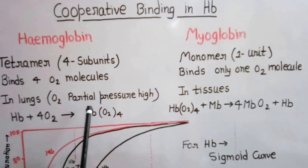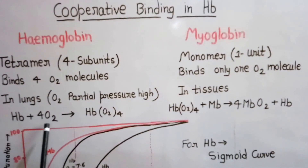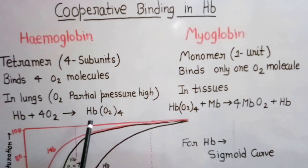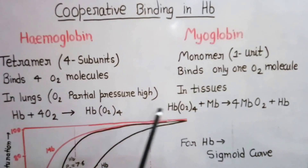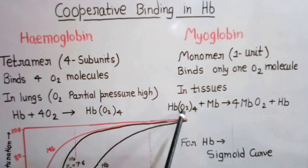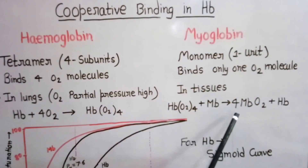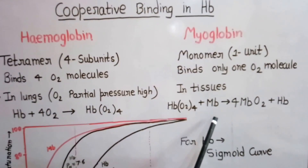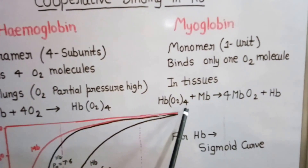Hemoglobin can bind four oxygen molecules while myoglobin can bind only one oxygen molecule. Hemoglobin works in the lungs where oxygen's partial pressure is very high — it binds four oxygen molecules and forms oxyhemoglobin, denoted HbO₂)₄. In tissues, myoglobin abstracts oxygen from oxyhemoglobin and forms oxymyoglobin. Therefore, the oxygen affinity of myoglobin should be greater than that of hemoglobin.